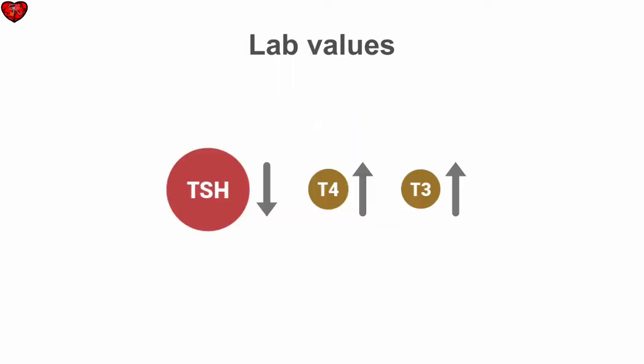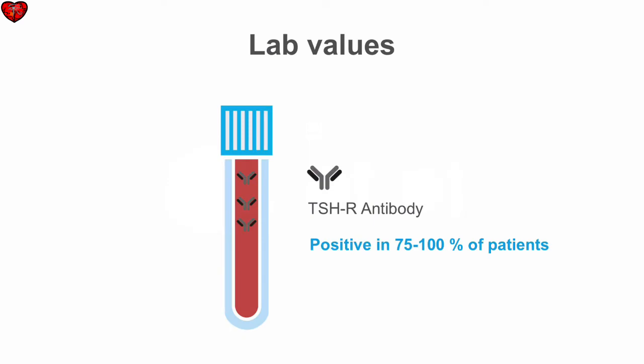The labs seen with Graves' disease are consistent with high levels of thyroid hormone and suppression of the TSH, but the labs are not specific for Graves' disease. You can measure the TSH receptor antibodies, which are positive in 75 to 100% of patients and are very specific for the diagnosis of Graves' disease.